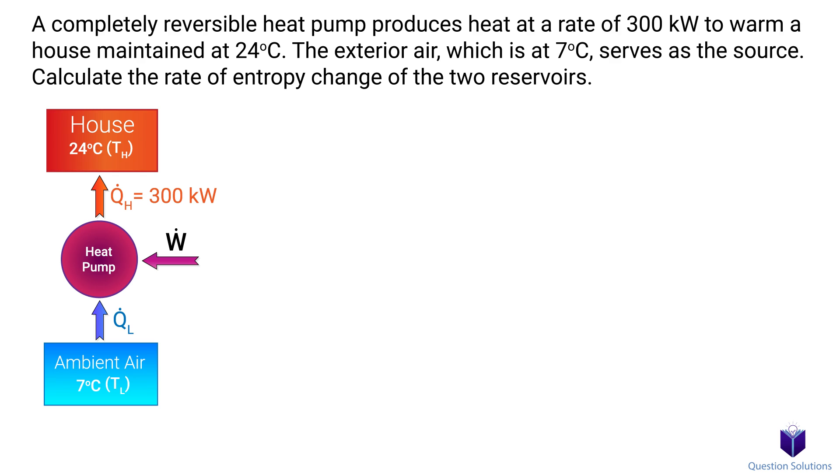Let's take a look at this problem, involving a reversible heat pump. We need to find the rate of entropy change in the cold and hot reservoirs. Let's start by writing down what we know. The heat pump produces 300 kW of power, so that's our QH. The house is at 24 degrees celsius, which is our TH, and the outside air is at 7 degrees celsius, which is our TL.